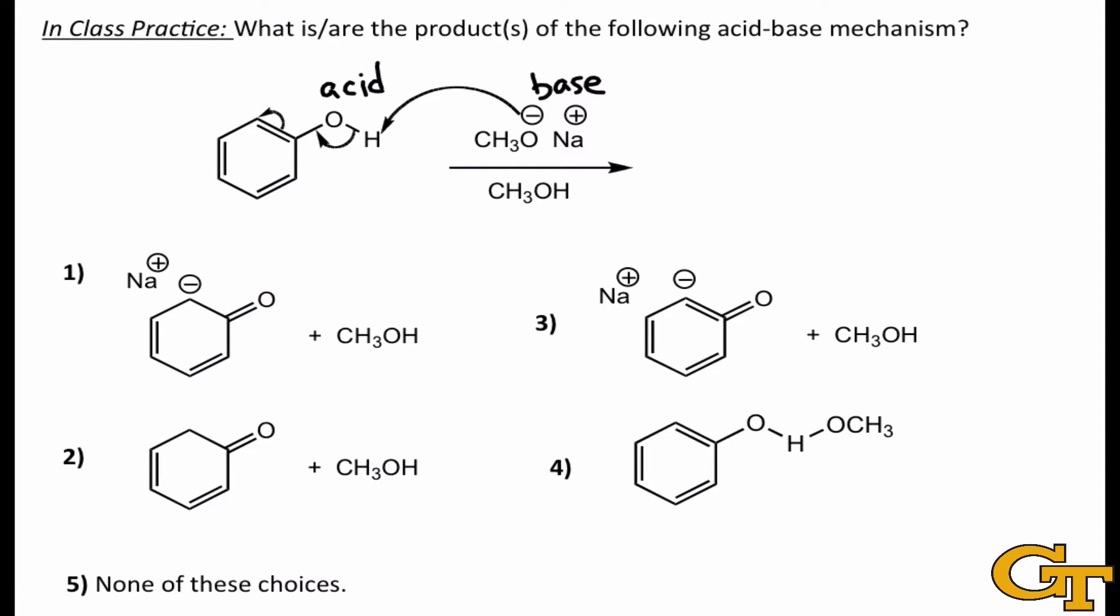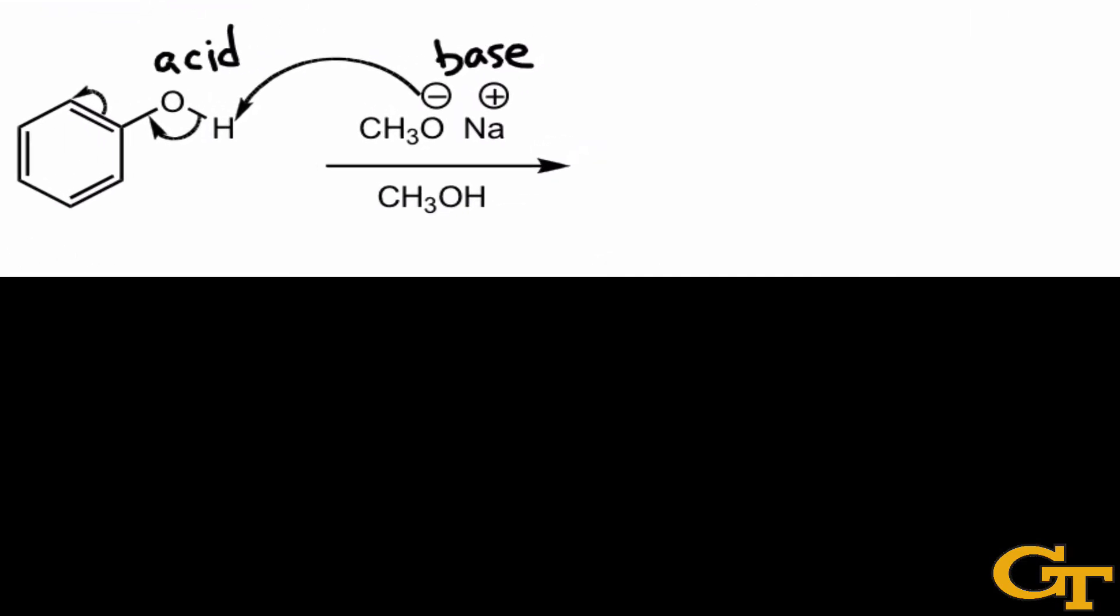Curved arrows always begin at a pair of electrons that can serve as an electron source, and that's got to be a lone pair, a sigma bond, or a pi bond. In this case, the oxygen atom has three lone pairs, and the curved arrow, which is starting from the negative charge, indicates that a lone pair on oxygen is acting as the source.